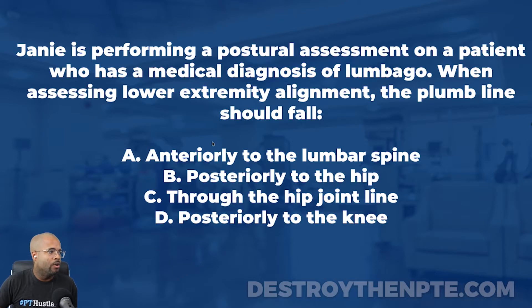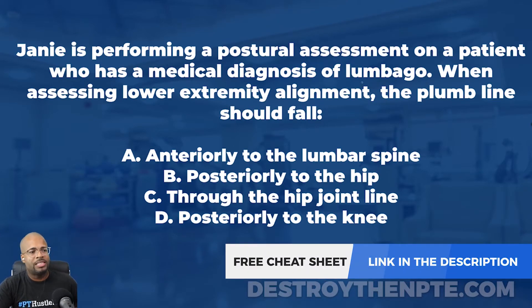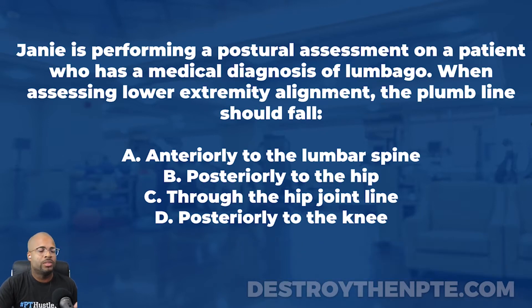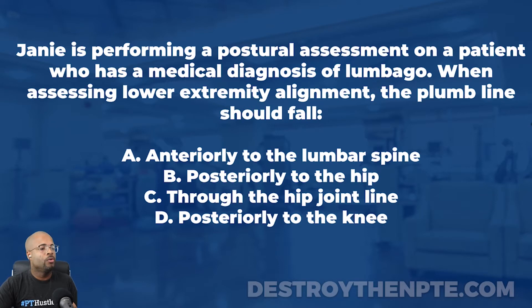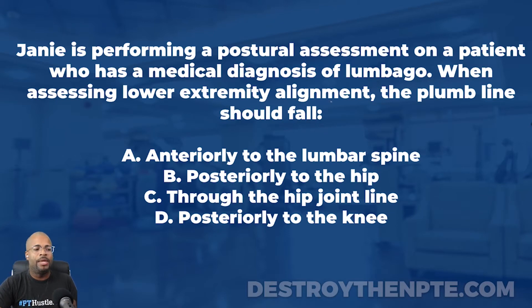For this week's clinical file, we have Janie, and Janie is performing a postural assessment on a patient who has a medical diagnosis of lumbago. When assessing lower extremity alignment, the plumb line should fall — A: anteriorly to the lumbar spine, B: posteriorly to the hip, C: through the hip joint line, and D: posteriorly to the knee. All right, let's knock this one down.